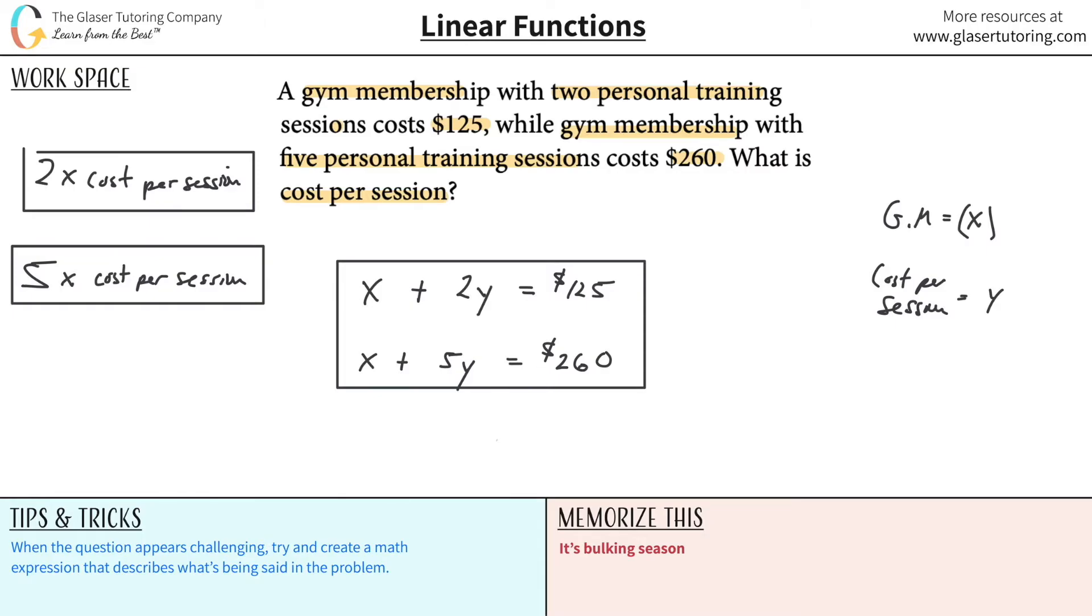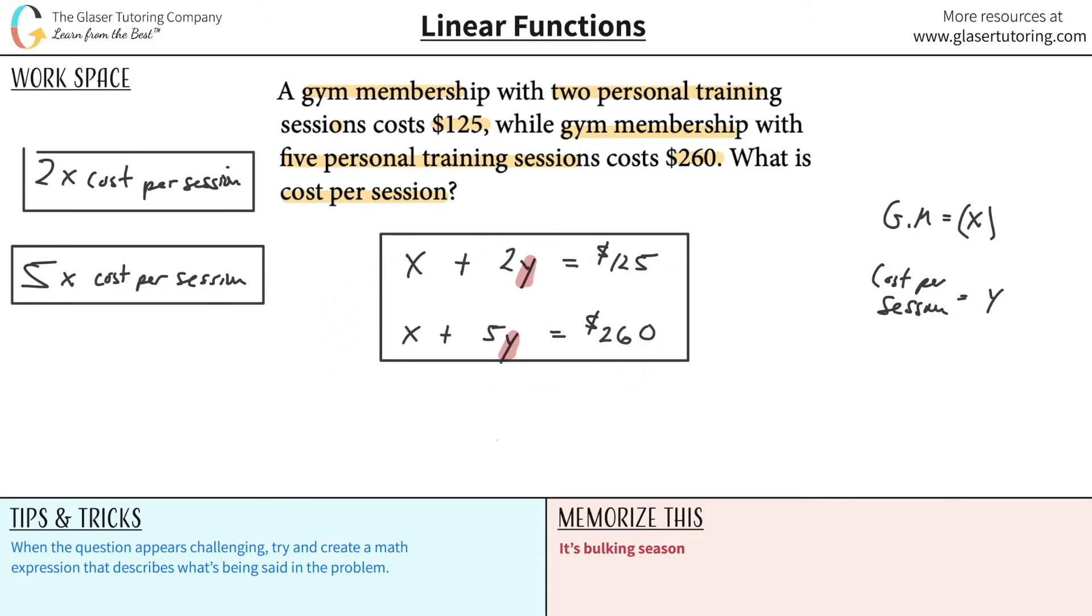So now, how do I, so what they're asking me is they want me to find then the cost per session. They want me to find Y. How do I find that? Well, this is where now we have to realize. We have a system of equations. You have two equations with two unknowns. You can solve this now. So watch.